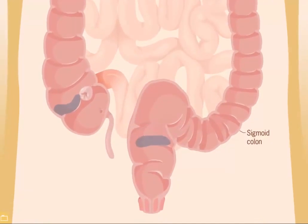The bolus moves down the descending colon and into the sigmoid colon before entering the rectum. The formed stool enters and is stored in the upper portion of the rectum. The anus contains anal sphincter muscles that remain tightly closed until neural input causes the rectum to widen. Then the stool descends, the anal sphincter relaxes, and defecation occurs.